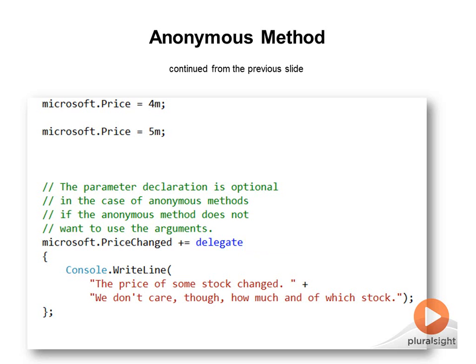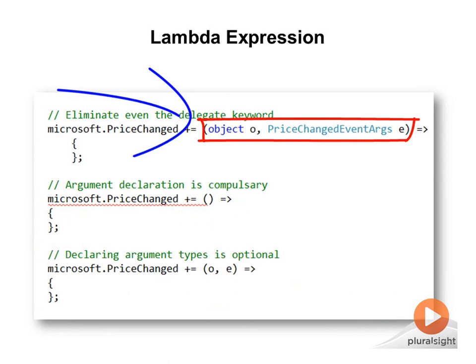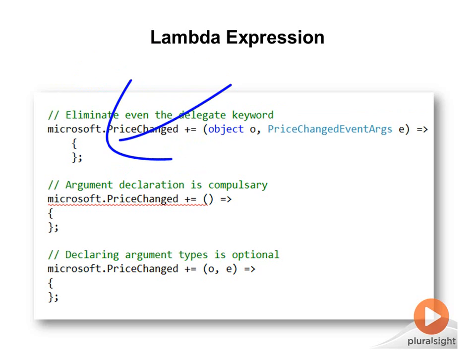C# 3.0 further simplified the use of delegates by introducing lambda expressions. A lambda expression is an anonymous method that has two parts: the left-hand side defines the parameters of the method, and the right-hand side defines the body, which may be an expression or a statement. In the middle is the => sign, which is read as 'goes to.' To assign a lambda expression to a delegate instance, simply remove the delegate keyword from the anonymous method syntax, and between the parameter declaration and the method body, insert the goes-to lambda operator.